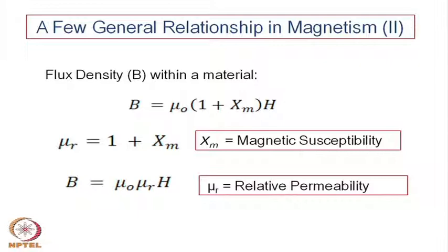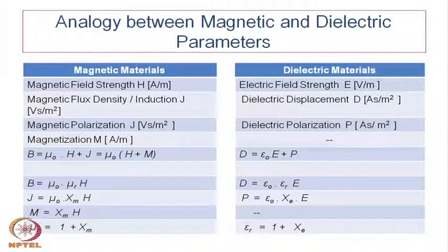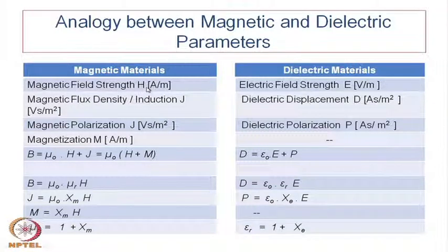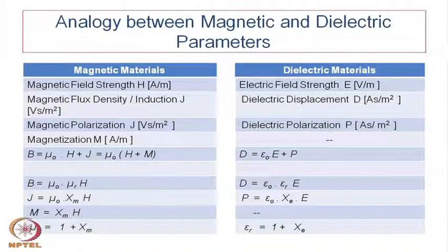The flux density with a material is B = μ₀(1 + χm)H, which is an important relationship. From this we derive relative permeability μr = 1 + χm. So magnetic induction is proportional to the magnetic field we apply. This is very closely related to the dielectric phenomena we studied earlier, giving us a comparison analogy between magnetic and dielectric parameters.